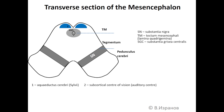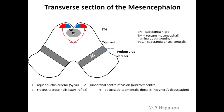Number two is the subcortical center of vision or auditory center. It consists of a motor part and a sensitive part. The motor part, which is the red one, originates number three, tractus tectospinalis, which is responsible for the startle reflex. Number four is decussatio tegmentalis dorsalis, or Meynert's decussation. R is nucleus ruber, the most important nucleus of the extrapyramidal system.